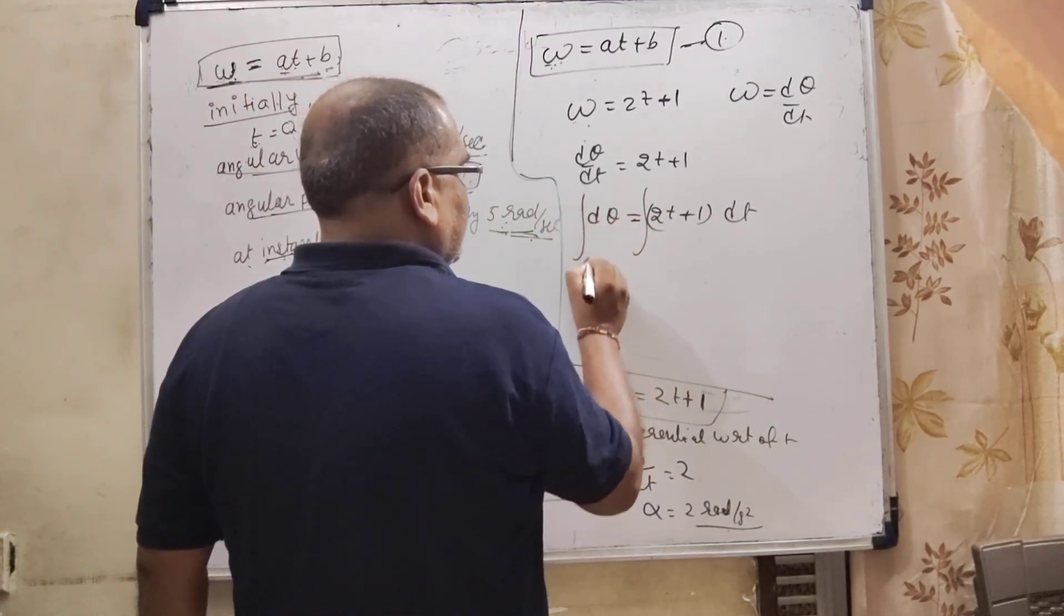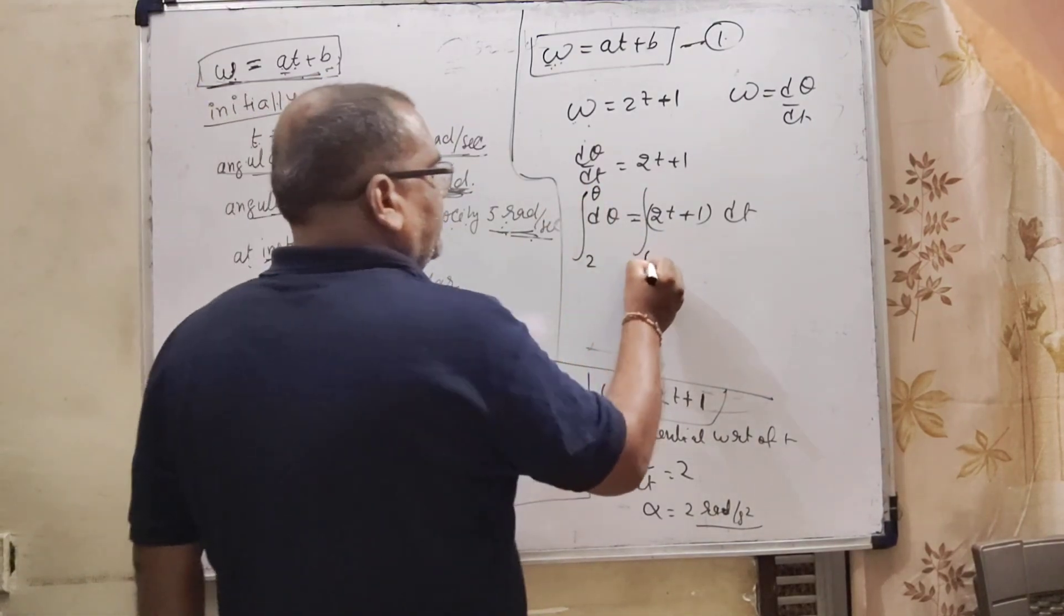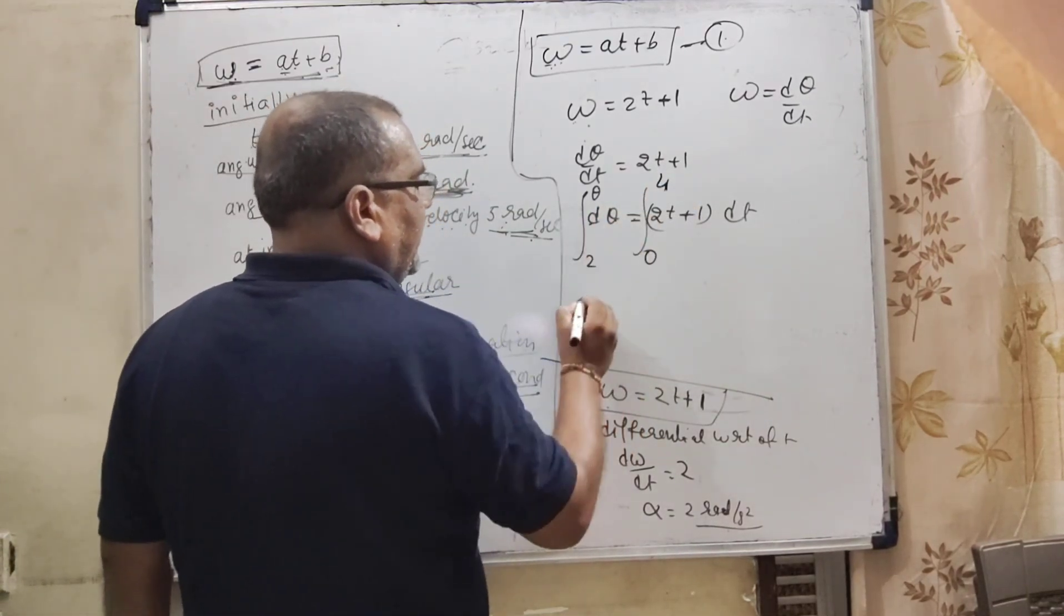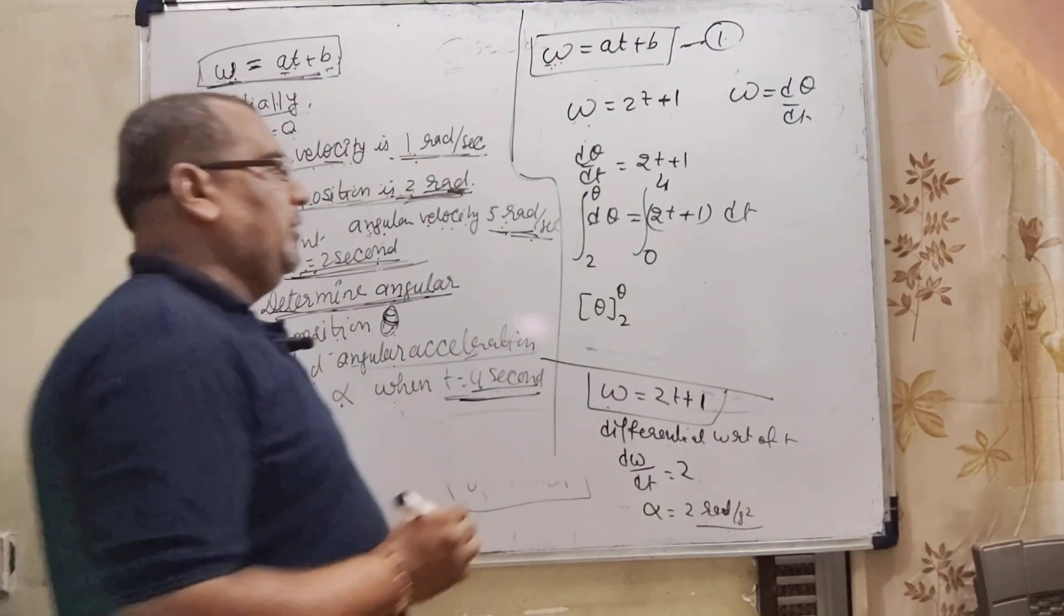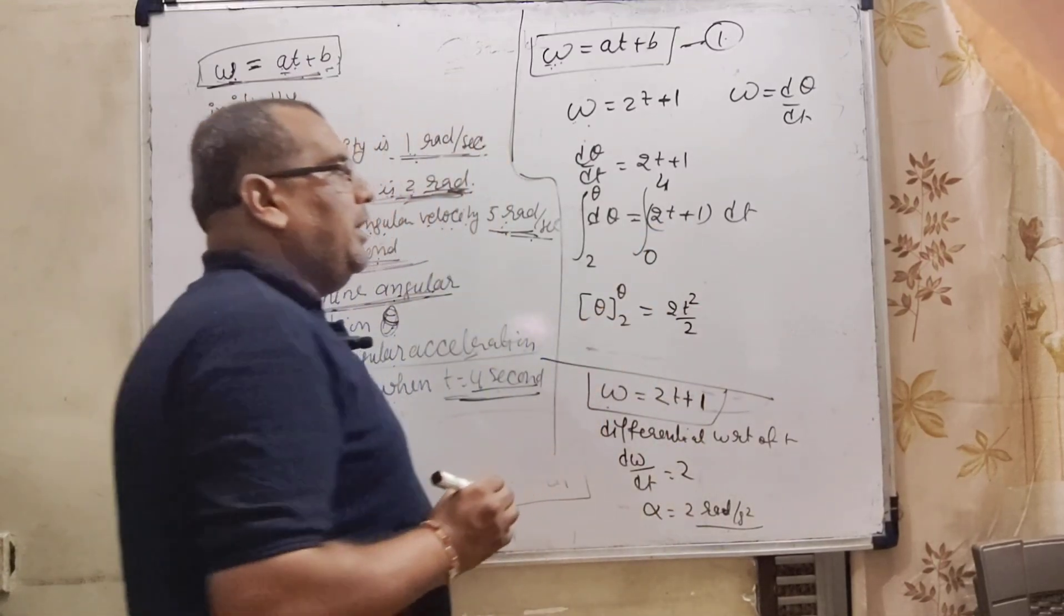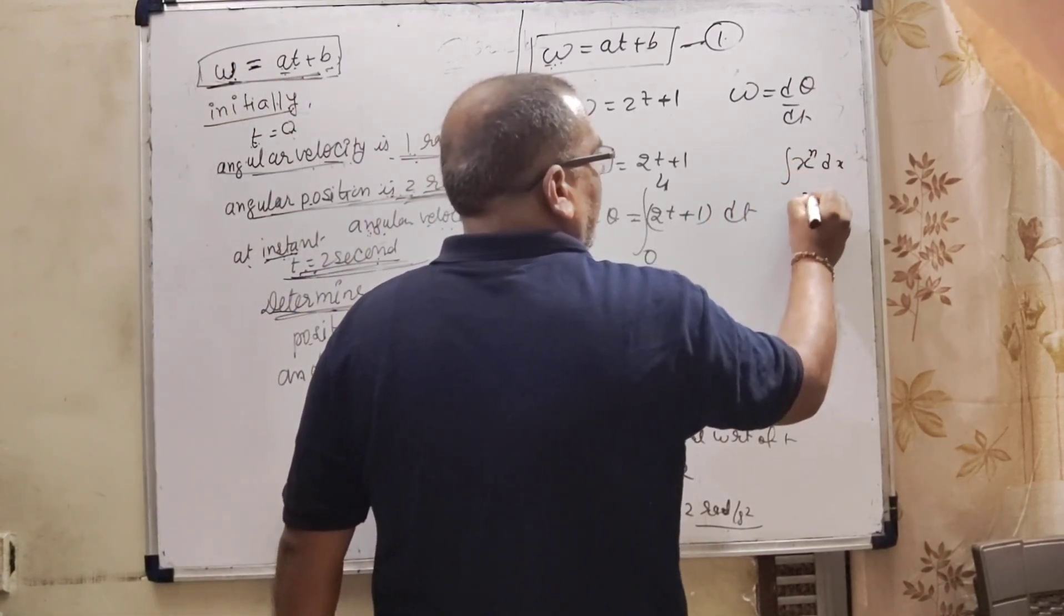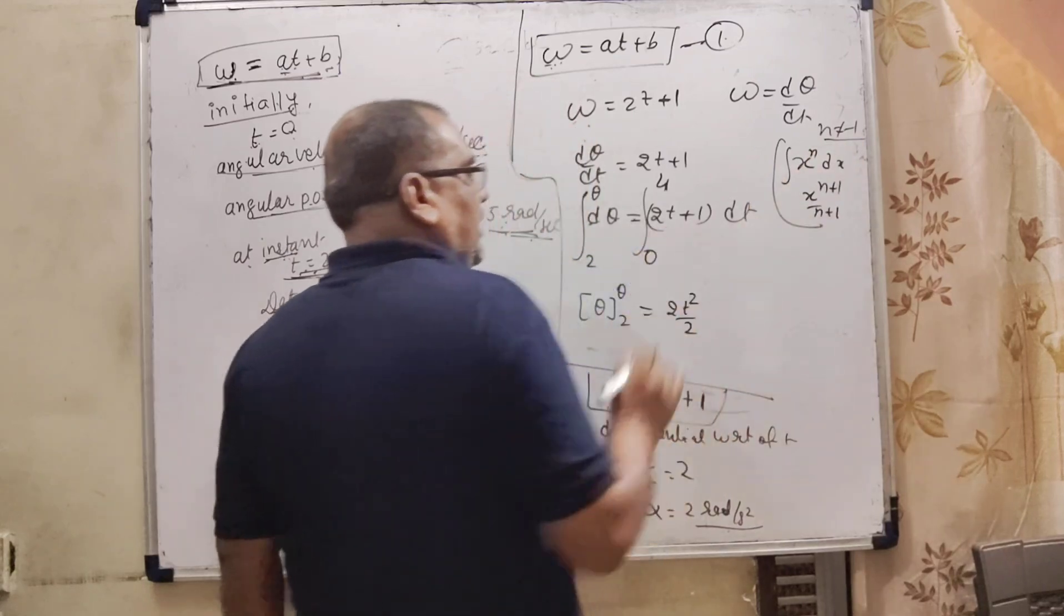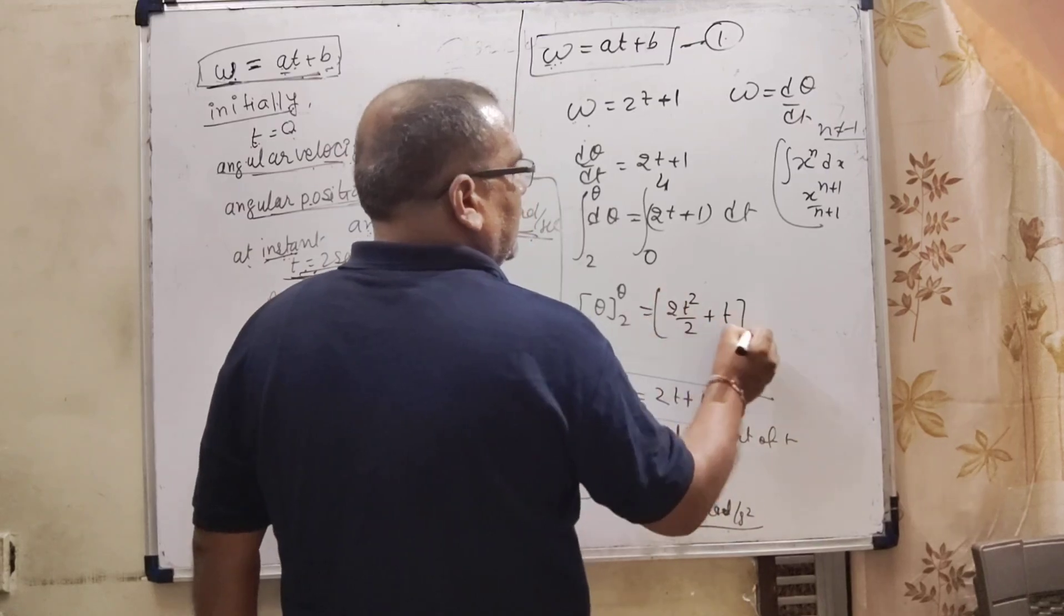Here lower limit, that is 2 radian at initial position means theta. Here initial time 0. Given that and final 4 seconds. So upper limit that is 4. d theta integrate becomes theta. Theta upper limit and lower limit that is 2. So integration 2t square by 2, because integration of variable that is x to the power n is x to the power n plus 1 upon n plus 1, where n is not equal to minus 1. So here we are using this formula. And 1 that is t from 0 to 4.